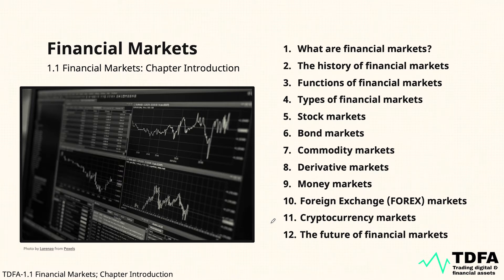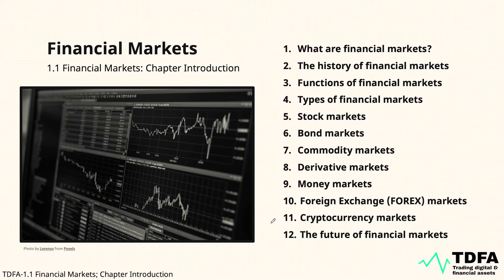Fourth, we're going to discuss the types of financial markets. Then we'll dive into stock markets, bond markets, and commodity markets. After that, we'll cover derivative markets and money markets. These are a lot of terms right now, but we're going through it step by step, and by the end of this chapter you will have it all down easily.